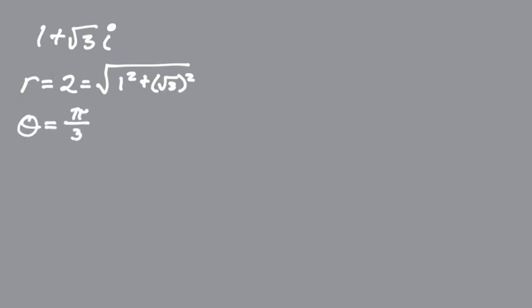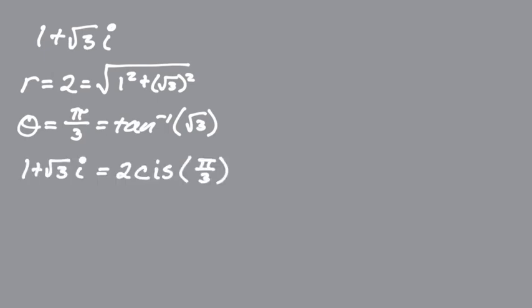If you're not sure about that, it's the inverse tangent of b over a, so the inverse tangent of √3, which equals π/3. So that means 1 + √3i = 2 cis(π/3).